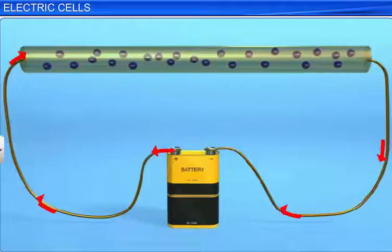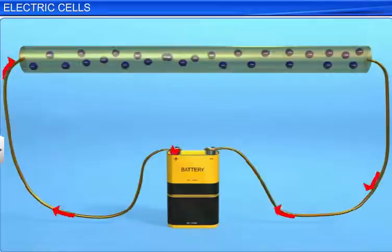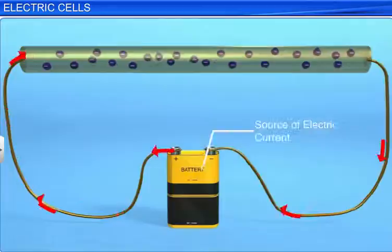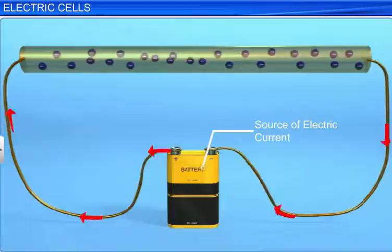Electric current in a conductor is due to the flow of charges. A constant potential difference across the ends of the conductor is required to maintain the flow of charges through it. For this, a source of electric current is required. The device that helps to maintain the constant potential difference across a conductor and thereby the continuous flow of charge through it is called an electric cell.